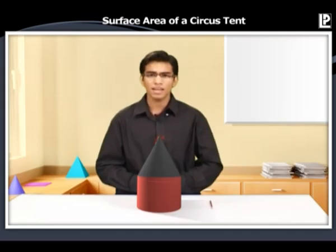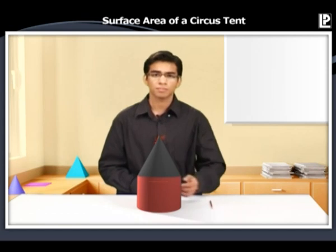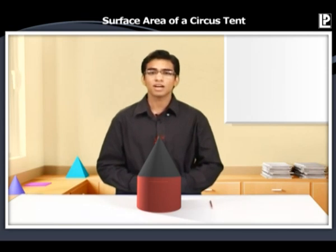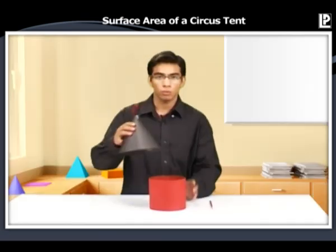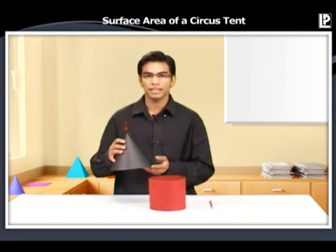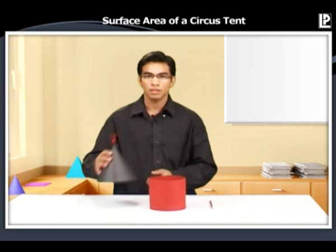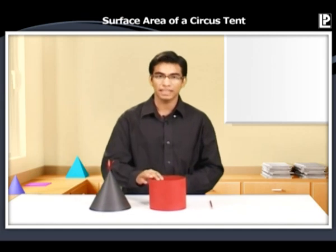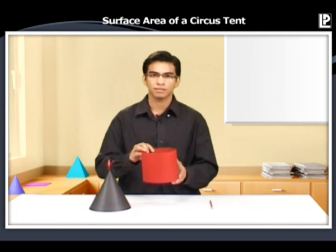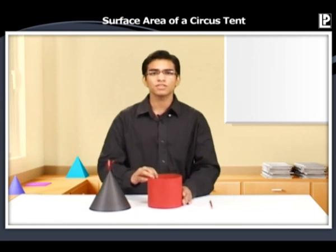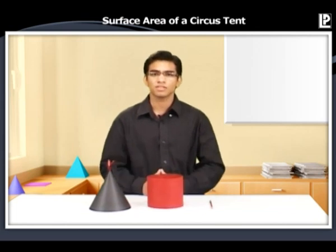You can see here that the tent is a combination of two shapes. Today we're going to find the curved surface area of this tent. Let's separate the two portions. The upper portion of the tent is a cone which is open at the bottom. The lower portion of the tent is a cylinder which is open at both the ends. Let's find the curved surface area of each shape separately.